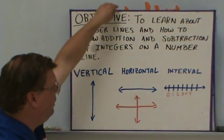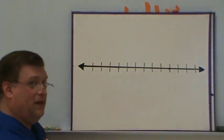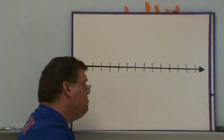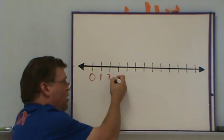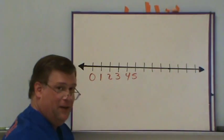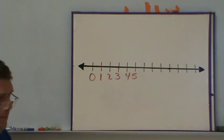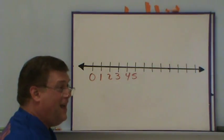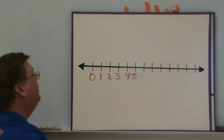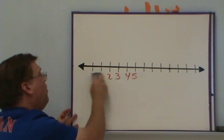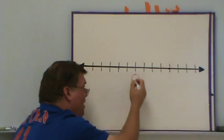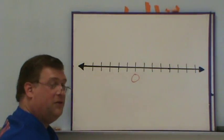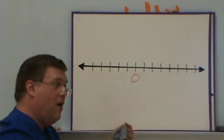Here's a blank number line with no labeling. You may have originally, when you first learned about number lines, started off with 0, 1, 2, 3, 4, 5, and so on down the line. Well, you don't need to start at 0 anymore because we've been talking about negatives as well as positives, so we may end up going further in the negative direction. Does 0 need to be in the middle? You may have been told in elementary school that you have to include 0 on every number line.